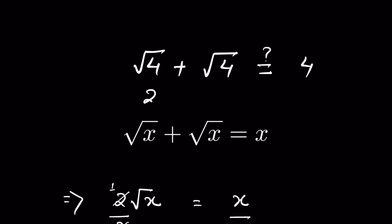Square root of 4 is 2. Square root of 4 is 2. It equals 4. LHS equals RHS. Therefore, the value of x is 4.